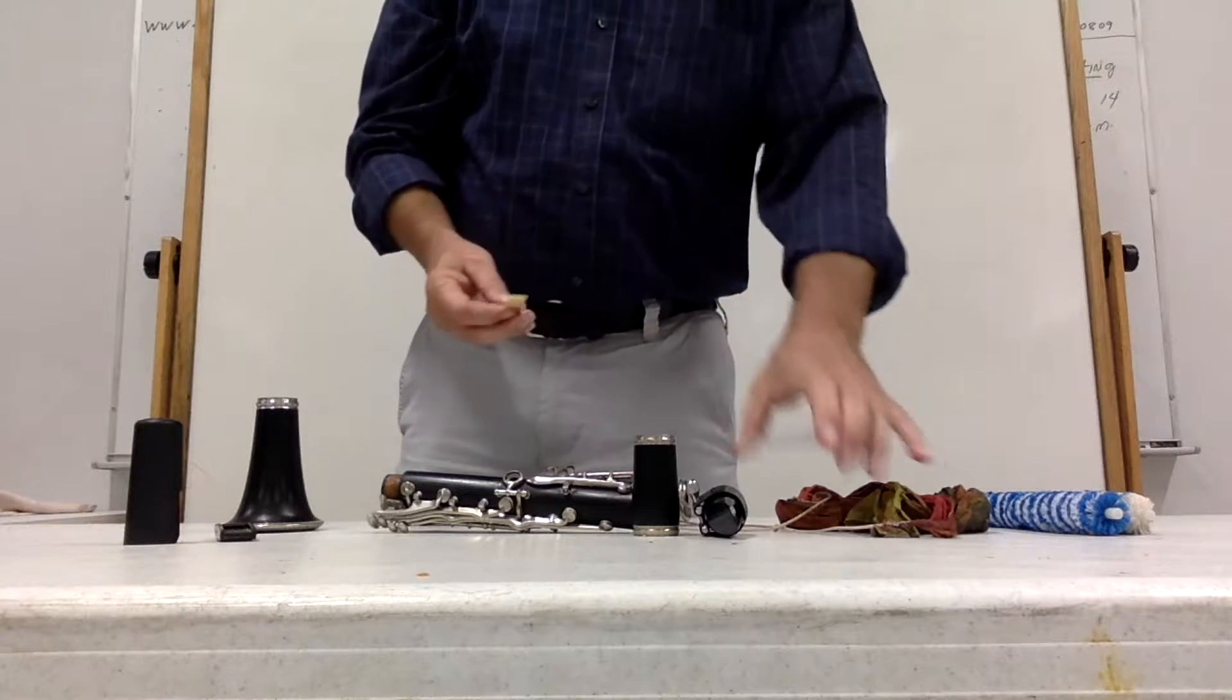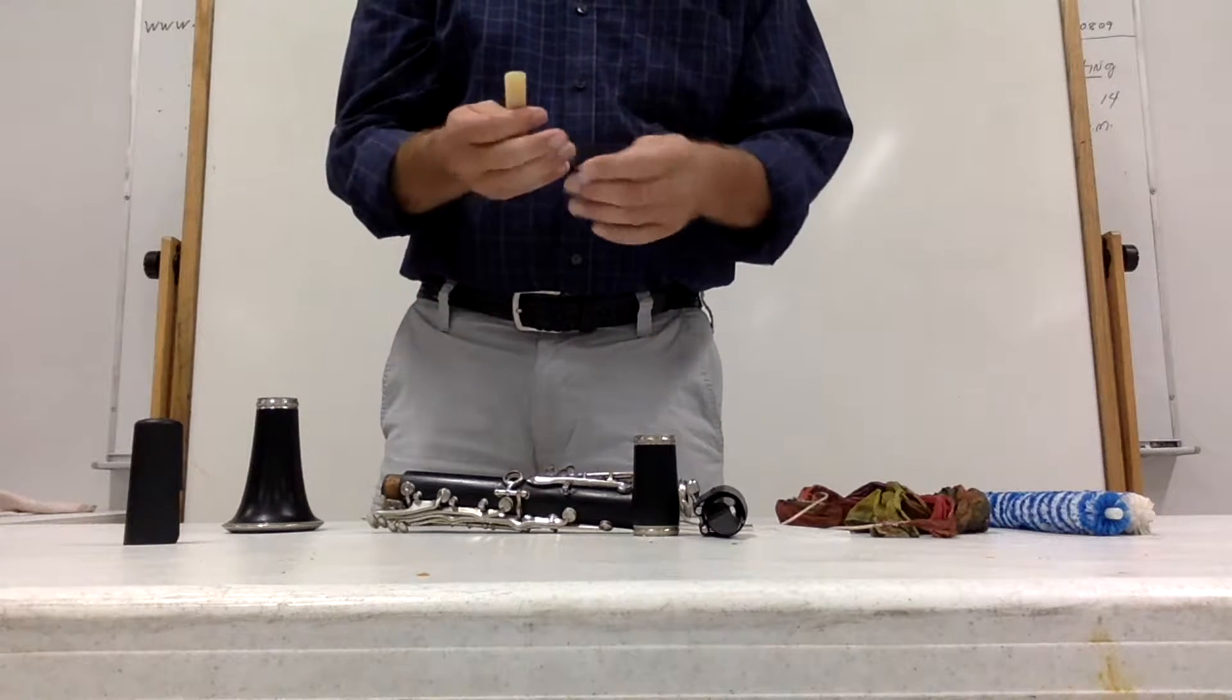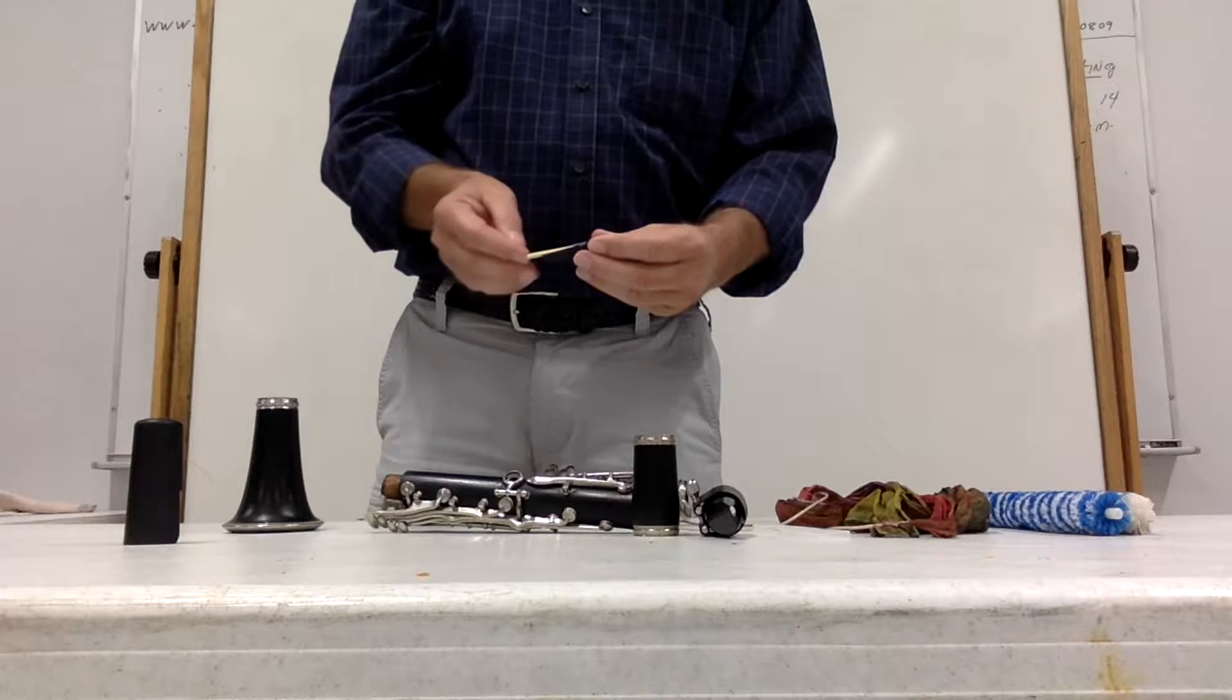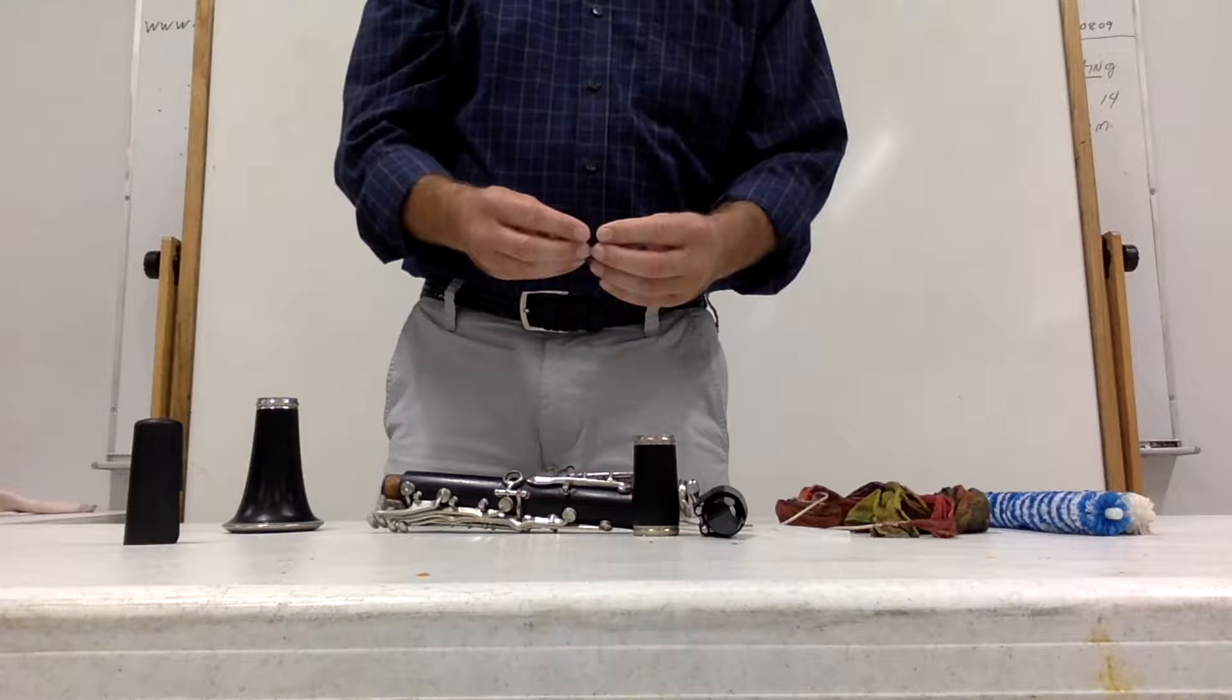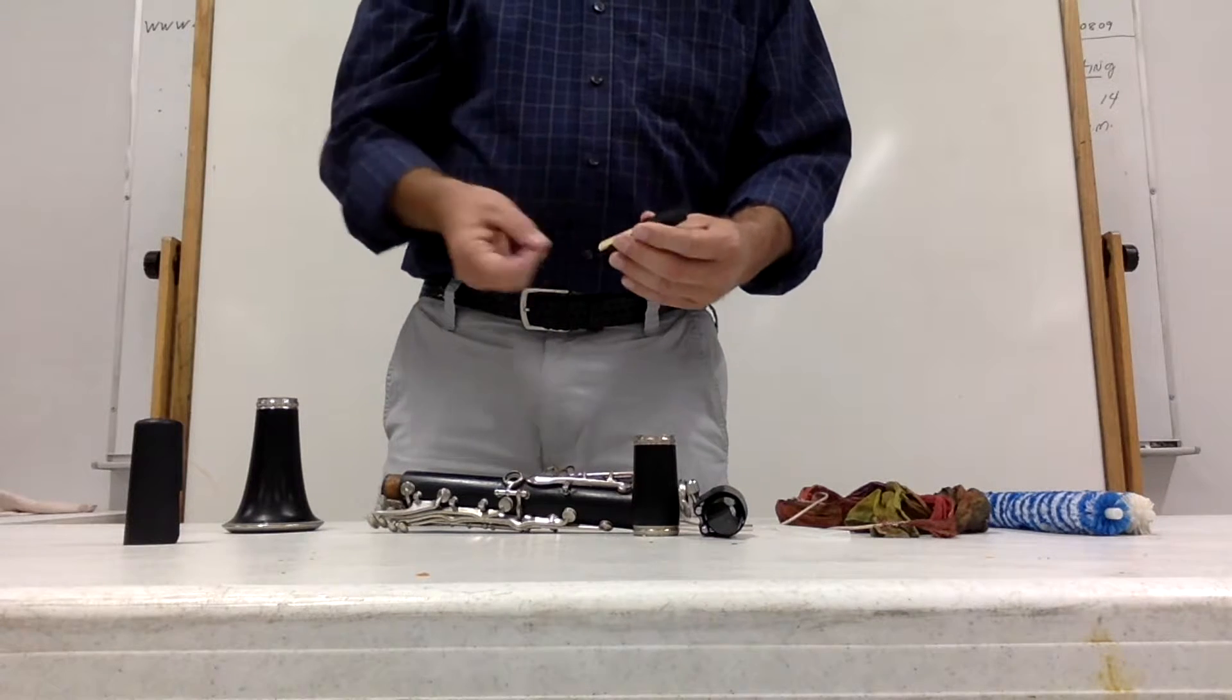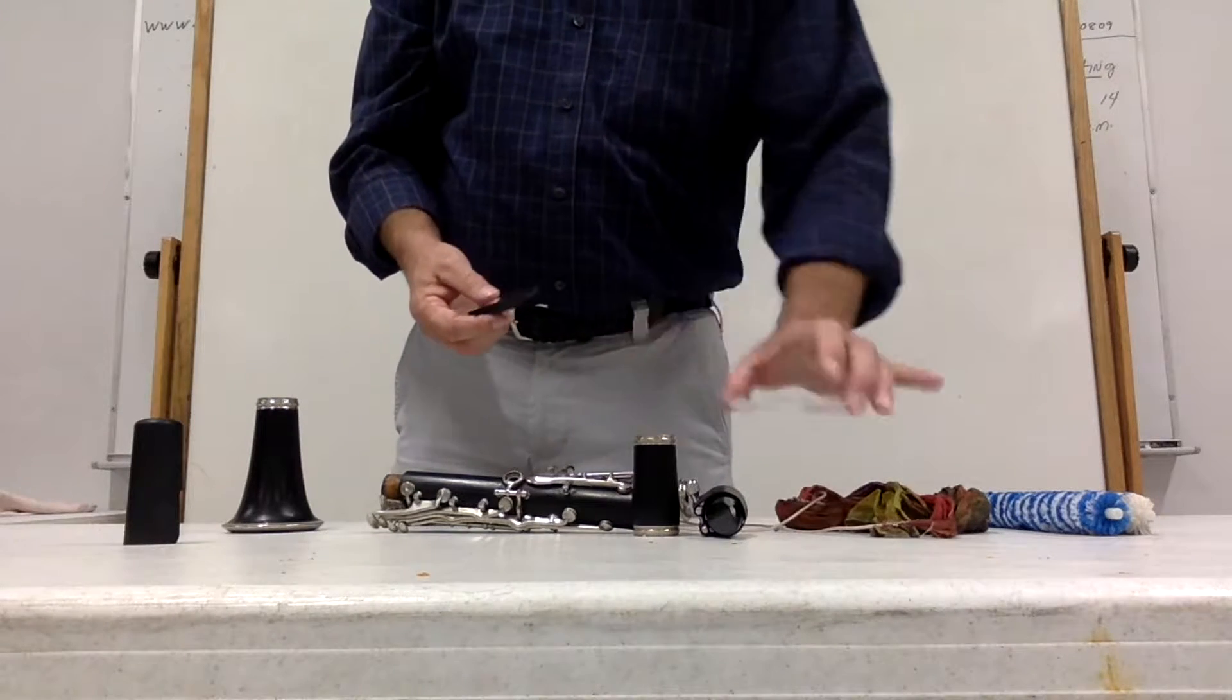A better way to do this is to buy one of these which is three dollars. You can keep two reeds in here. You slide that in there. You can put one on the other side as well and have two reeds going at the same time. That will keep it flat as it dries and it will protect it and it's easier to put it in there rather than in the case that it comes in.